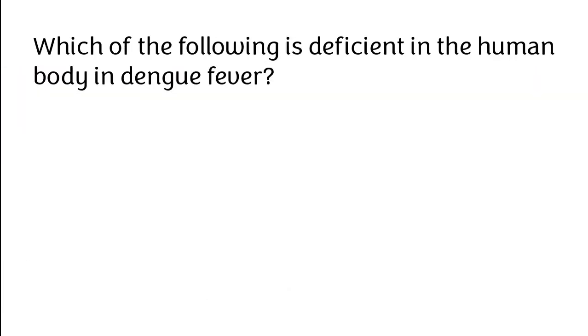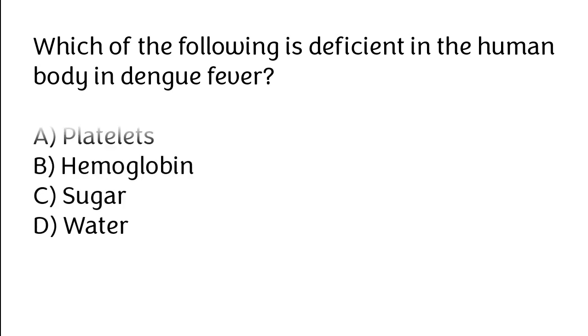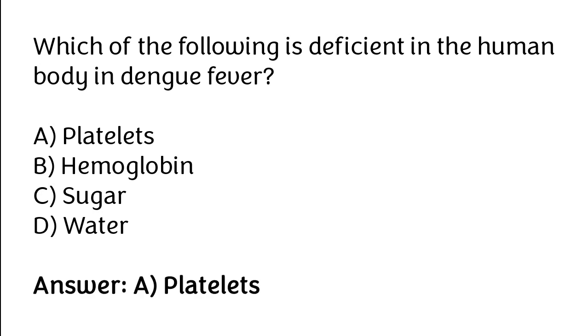Which of the following is deficient in the human body in dengue fever? Platelets, hemoglobin, sugar, water. The correct answer is option A: Platelets.